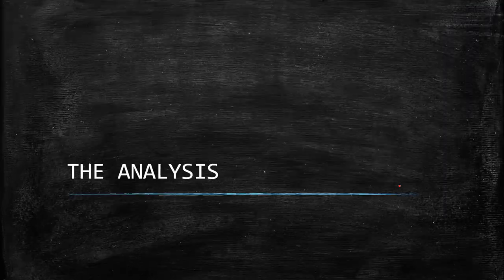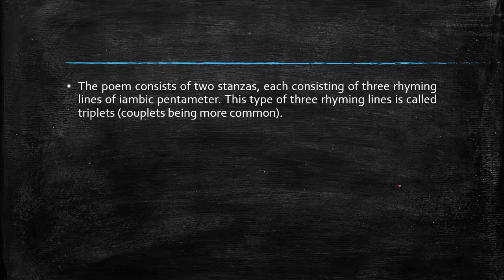Now we'll move on to our analysis. This poem is about a lone eagle perched atop a steep rock in the sea. Eagles are large and powerful birds of prey with large hooked beaks and excellent eyesight. They also have powerful talons which help them catch prey. Eagles build their nests on high cliffs or in tall trees, and there are over 60 different species of eagle in the world.